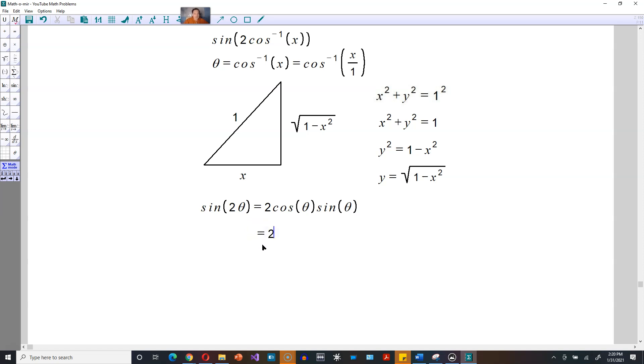2 cosine is x over 1 from the triangle, so cosine gets replaced with x over 1. Sine of theta from the triangle will look like the square root of 1 minus x squared over 1. This becomes 2x times the square root of 1 minus x squared.